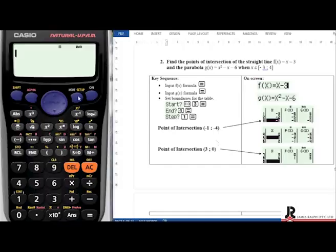First thing you need to do is change your calculator into table mode. Push your mode button, select 3 for table.